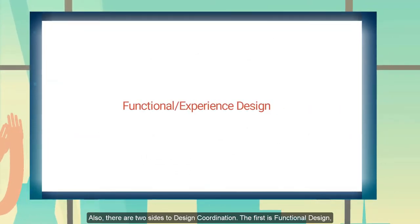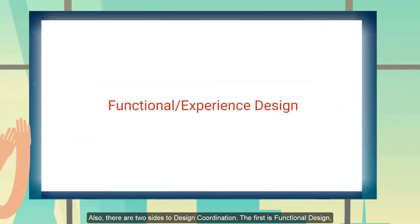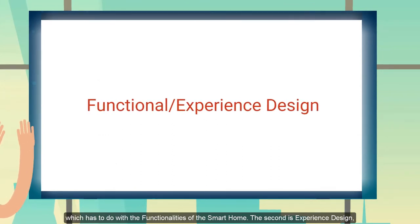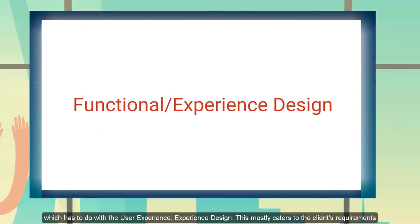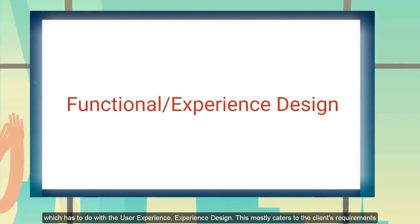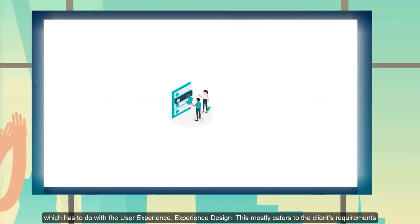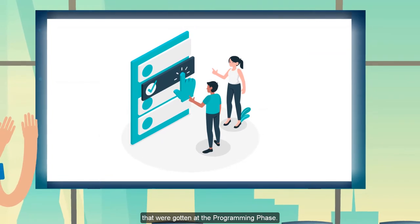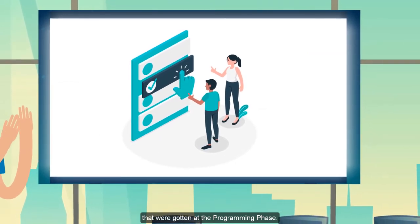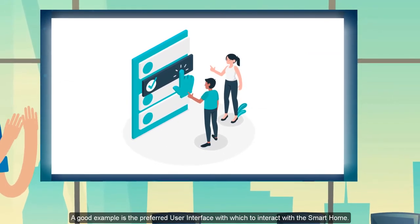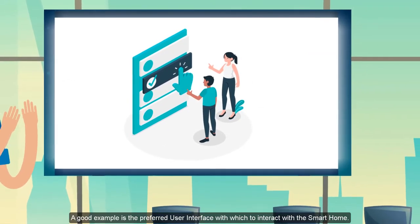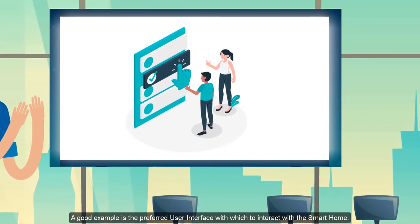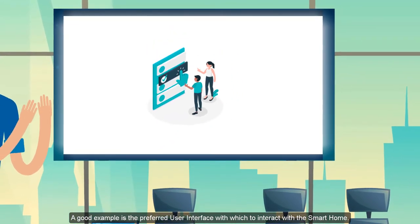There are two sides to this design process. The first one is the functional design, which has to do with the functionalities of the building. And the other one is the experience design, which has to do with the user experience. This is mostly catered towards the client's requirements that were gathered at the programming phase of the building — for example, the user interface or other options that the client went for during the client discovery phase carried out in the earlier stage.